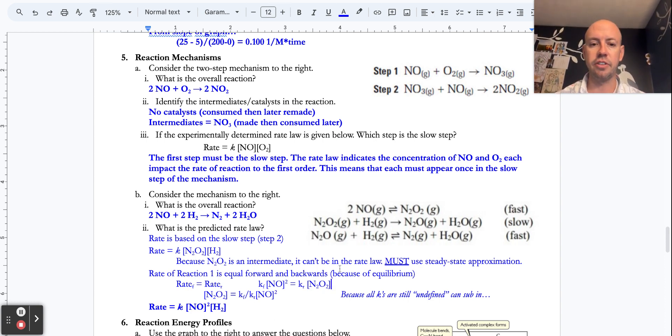So then if I rearrange this a little bit, the problem, once again, is that I can't have an intermediate up there. So if I rearrange it, I say N2O2 equals KF over KR NO squared. And the weird thing here is that the K forward, we don't know what that is. We haven't calculated it. The K reverse, we don't know what that is. We haven't calculated it. So this new K right here, we can just say, well, that.